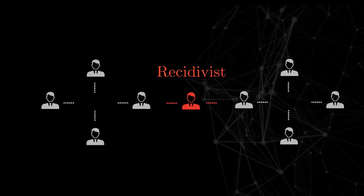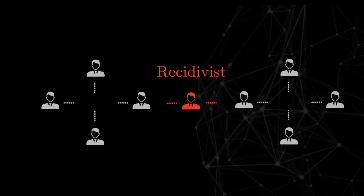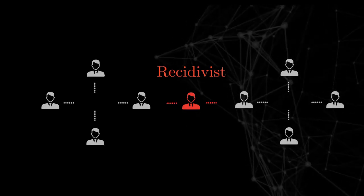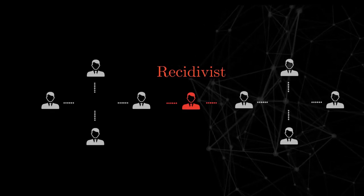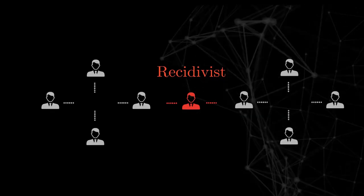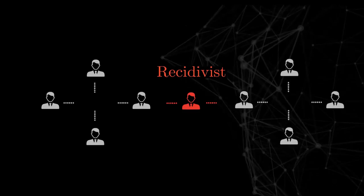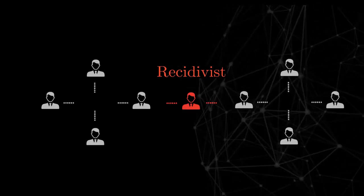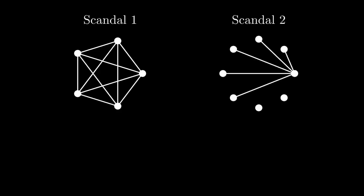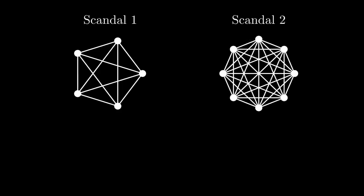So it's like those people who just seem to know everyone at a party, even if they're from totally different walks of life. Exactly. The research actually calls these folks recidivist agents. Recidivist agents, sounds kind of ominous. It kind of is when you think about it. They're like the glue, the connective tissue that holds these whole corruption networks together. And they make the networks way more resilient, way harder to dismantle. Because even if you manage to break up one corrupt group, these recidivists are already connected to other people, ready to start a whole new scheme somewhere else.